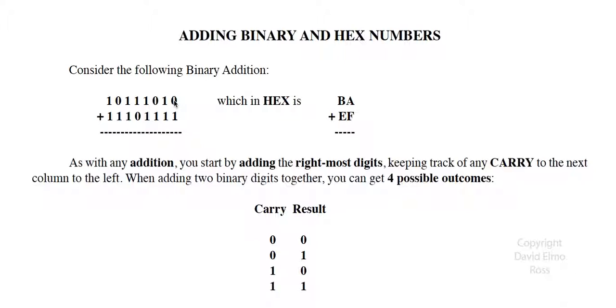Now what we're going to do with binary, if we start with that, is we're going to add two digits together. And then we're going to figure out what that result is. Now we have four possible outcomes.